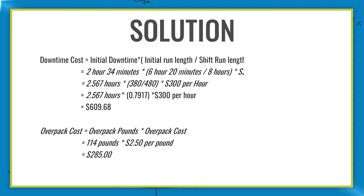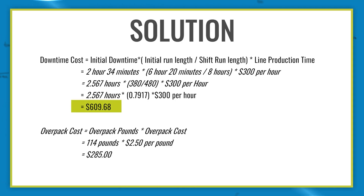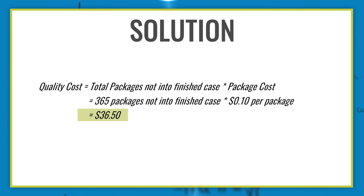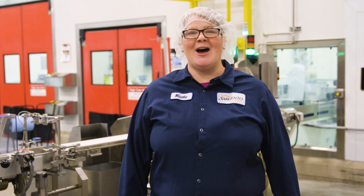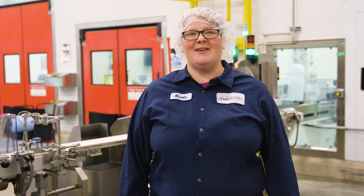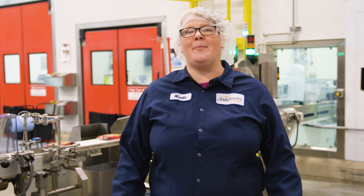Let's break it down. The downtime cost is $609.68, while the overpack cost was $285, and the quality cost was $36.50. Given the cost impacts to the company, which would you want to address to create the biggest impact? If you choose downtime, you did very well. Downtime has a significant cost impact to any company. We try our best to make sure our lines are running.